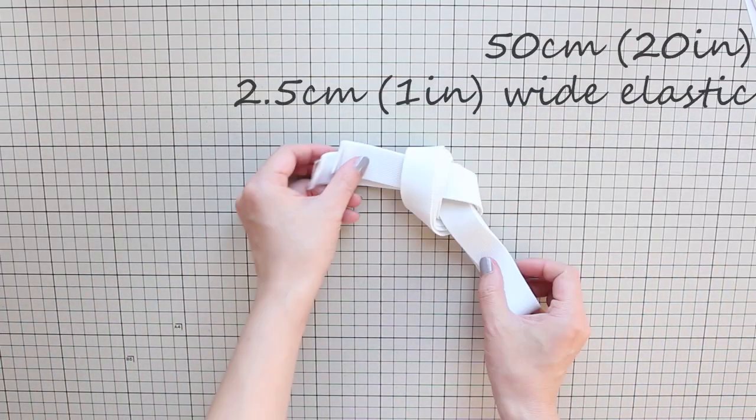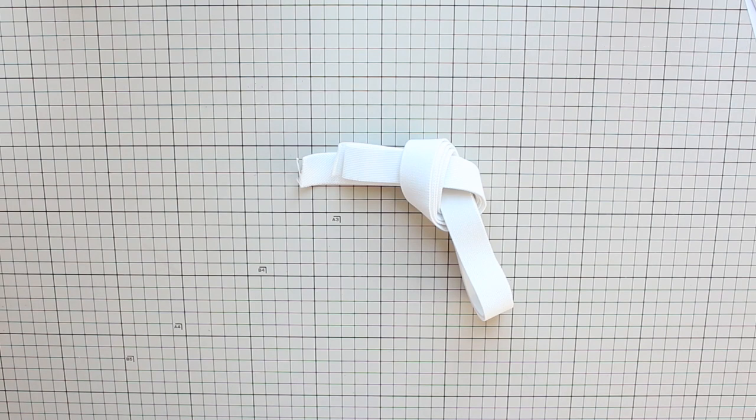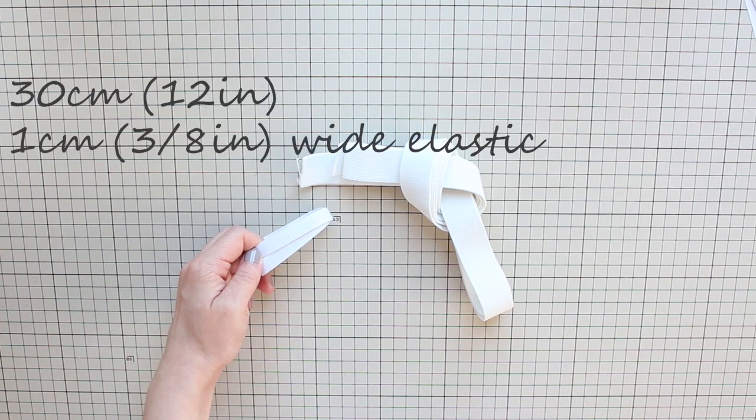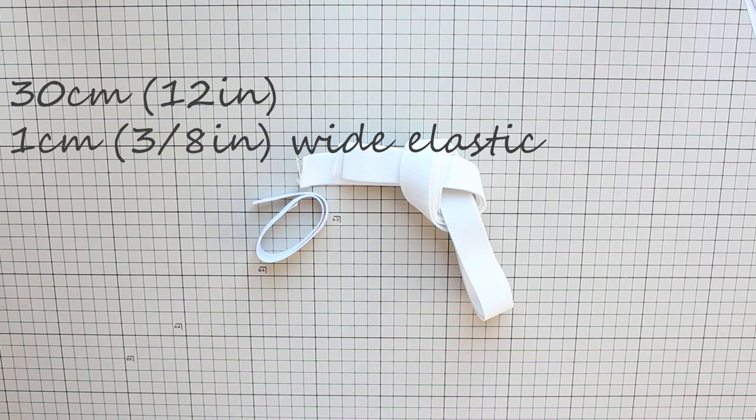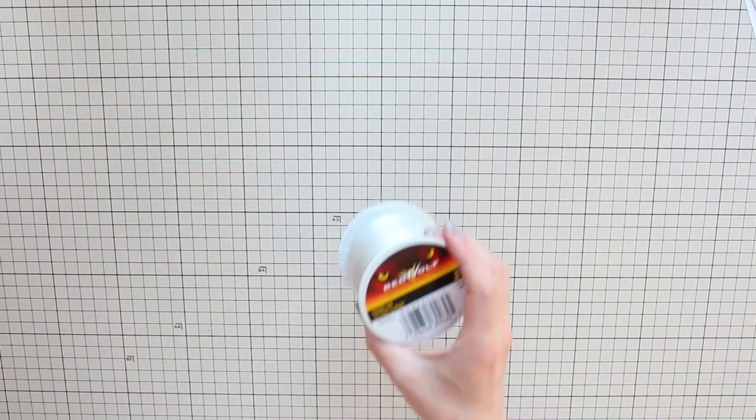50 centimeters or 20 inches of two and a half centimeter or one inch wide elastic and 30 centimeters or 12 inches of one centimeter or three eighths of an inch wide elastic. This is optional but it helps keep the armband up. I'll show you how to do this.